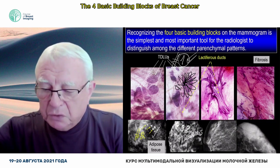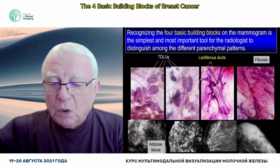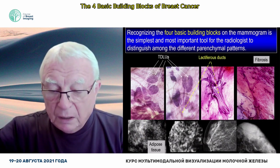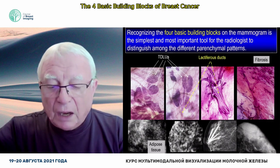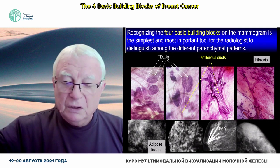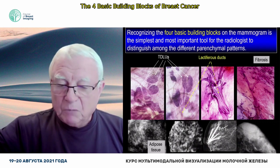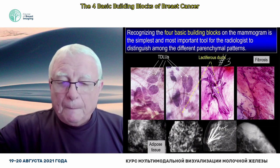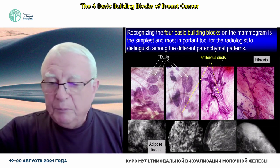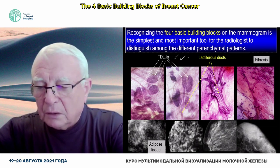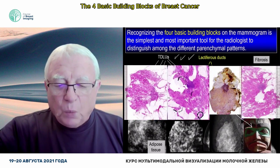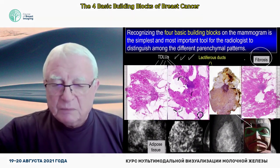So we have managed building blocks one and two. Building block number three is the major lactiferous duct, which the X-ray makes visible as linear densities separated by fat — linear radiolucent areas. And then comes the trouble. We can handle building blocks one, two, and three. But both you and I look confused when the fourth one — fibrosis — comes into the picture.